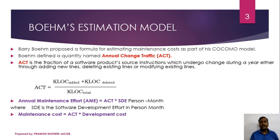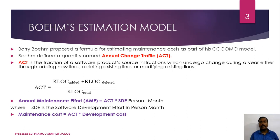Barry Boehm proposed a formula for estimating maintenance cost as part of his COCOMO model. Boehm defined a quantity named Annual Change Traffic (ACT). Annual Change Traffic is the fraction of a software product's lines of code which undergo change during a year, either through adding new lines, deleting existing lines, or modifying existing lines. So ACT equals KLOC added plus KLOC deleted, divided by the total KLOC available in the software product before doing the maintenance.